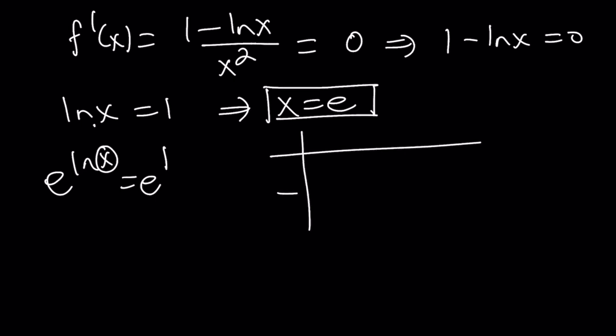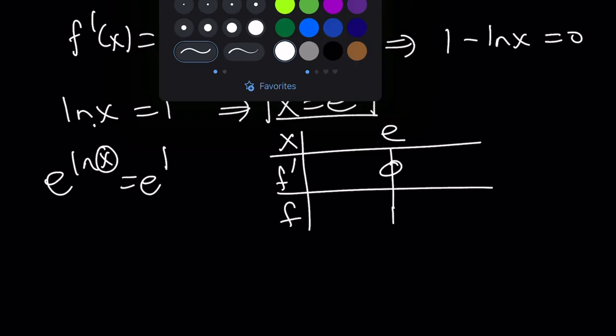So that's our critical value. And that's the only critical value because we only get one solution from setting the derivative equal to 0. So let's go ahead and make a table. I know some folks are going to use the second derivative test, which is perfectly fine, but I like this one better. It's more visual. And also, I don't want to take the second derivative. It's kind of painful sometimes. f prime and f. We're going to mark the critical point here. And that is e.